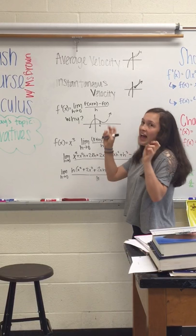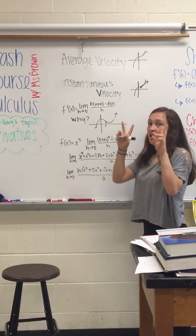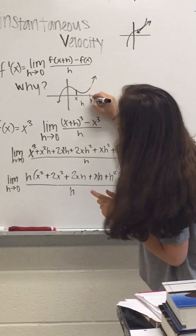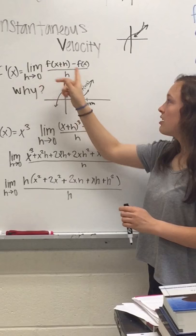To find the instantaneous velocity of given x, you're going to want to first find the average velocity, and then use the limit to approach the x value itself. So, if we take a given interval of h, then we have a point x plus h with the y value being f of x plus h, and this value being f of x.